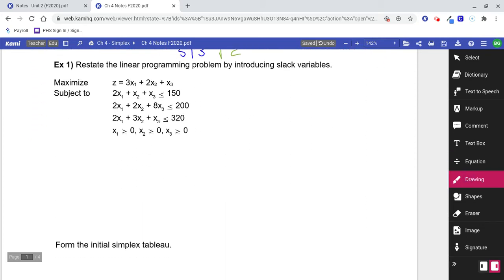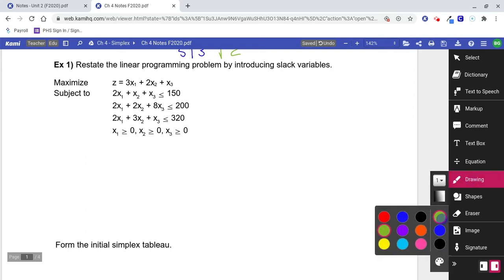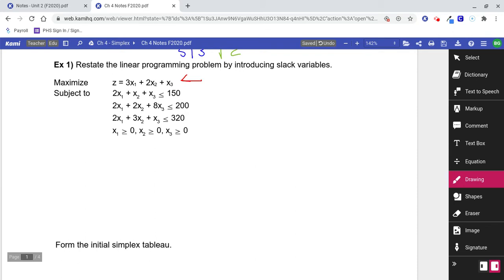Example 1 says restate the linear programming problem by introducing slack variables. So you don't need one for this. Anybody know why? It's already an equation. Very good. I'm trying to make an equation. This is already an equation. Don't put a slack variable there. We don't need it. But I do need one here.